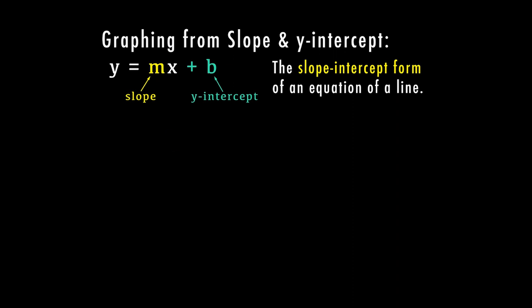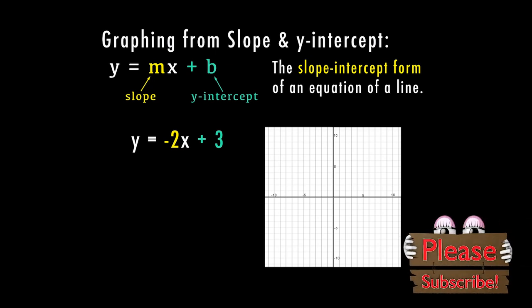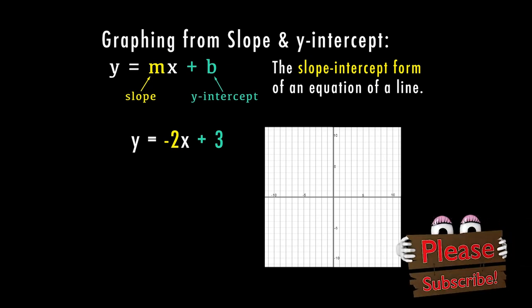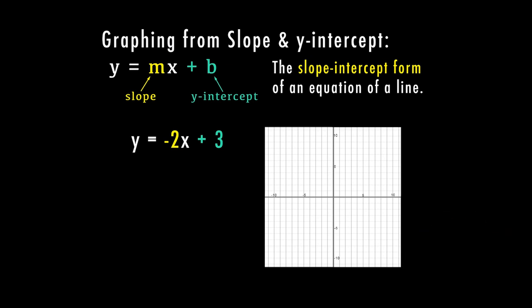So if I have the equation y equals negative 2x plus 3, I can use this information and graph those points and then form my line. Based on our equation, we have a linear non-proportional line. Because we have a y-intercept which is plus 3, I can tell that this is going to be non-proportional.